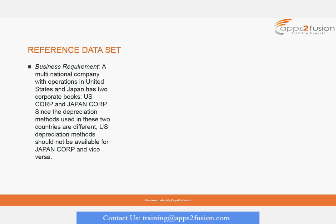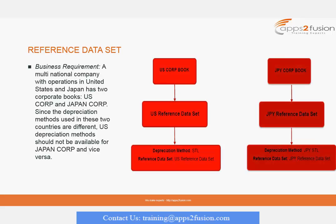Another case: a multinational company with operations in the U.S. and Japan has two books. The requirement is that U.S. users see only U.S. depreciation methods, and Japan users see only Japan depreciation methods — they should not see each other's methods. So we define two different reference data sets: one U.S. reference data set with U.S.-specific values, and one Japan reference data set with Japan-specific values. When we create a book, we associate it to its particular reference data set.